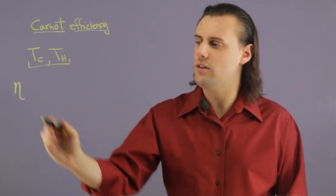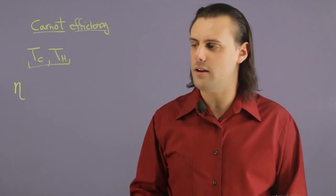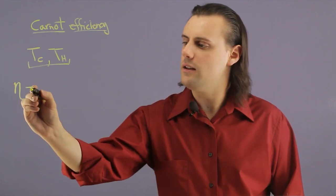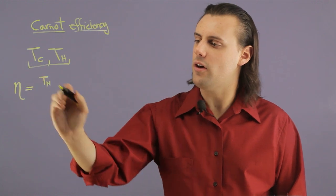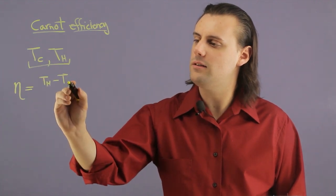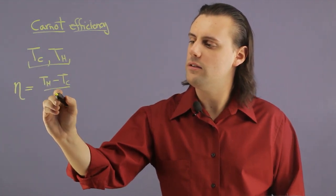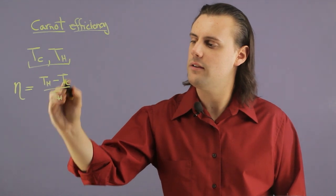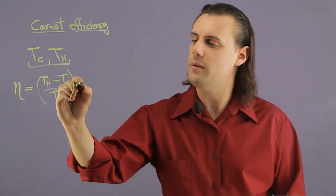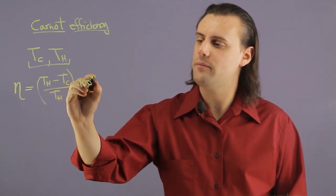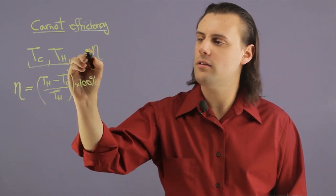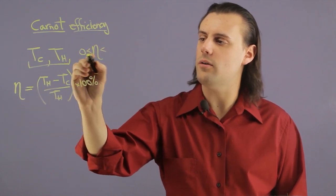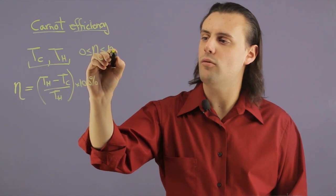So we're going to denote the efficiency with the Greek letter eta and it's defined as the temperature of the hot reservoir minus that of the cold divided by that of the hot. And we can multiply by 100% such that eta will be bound by 0 and 100%.